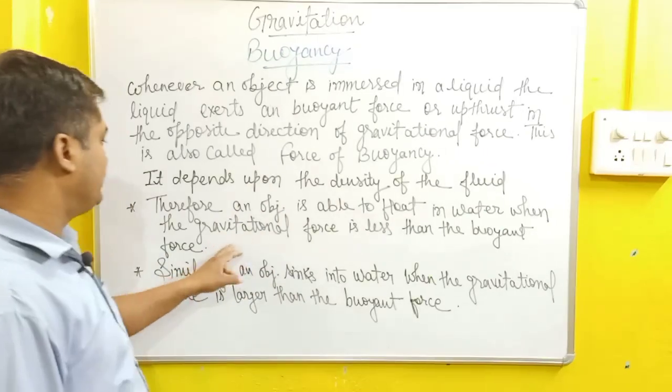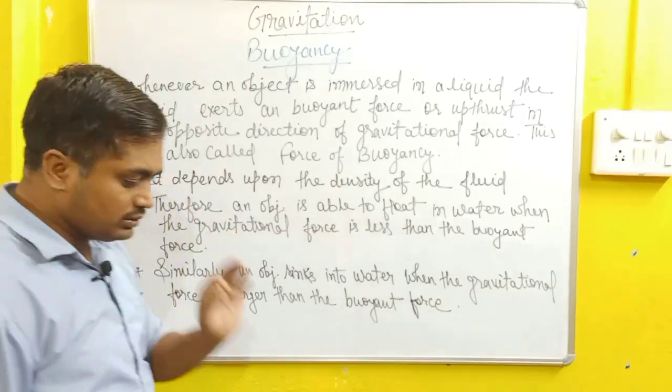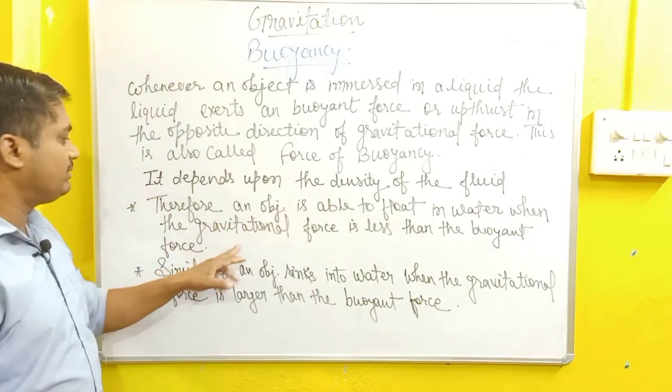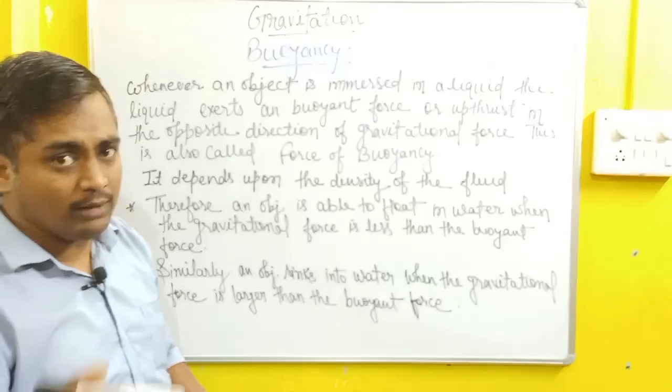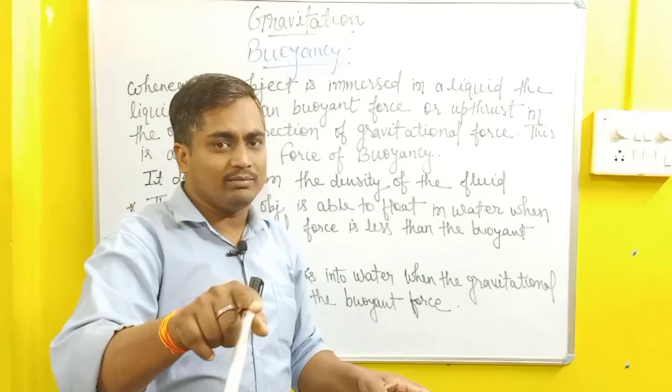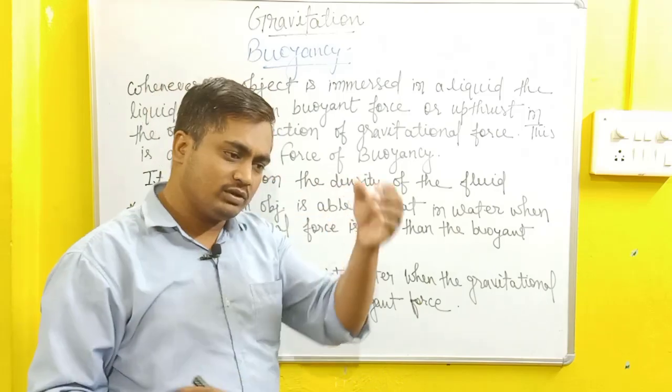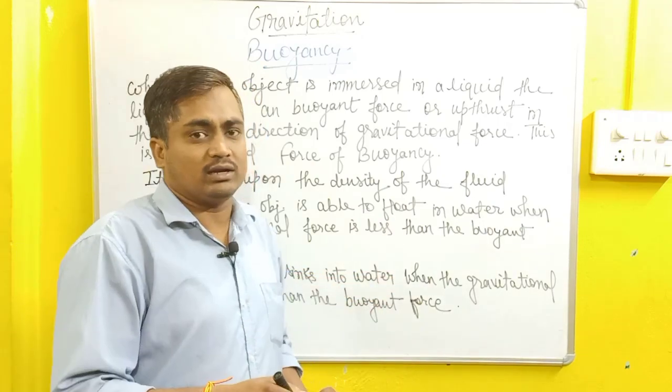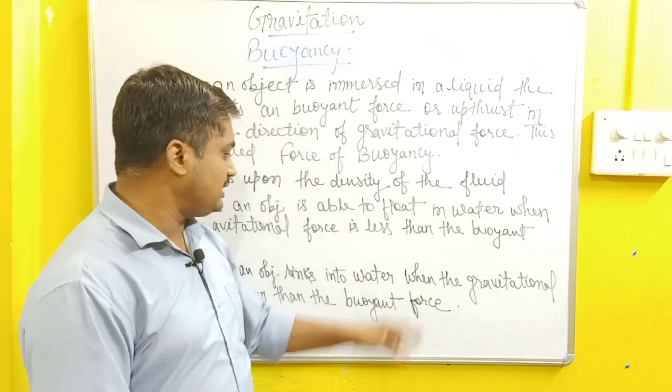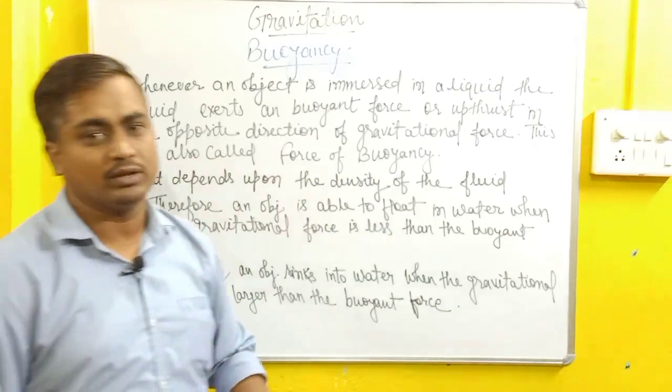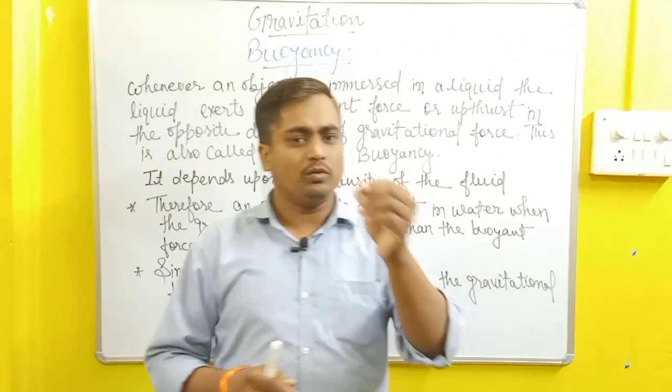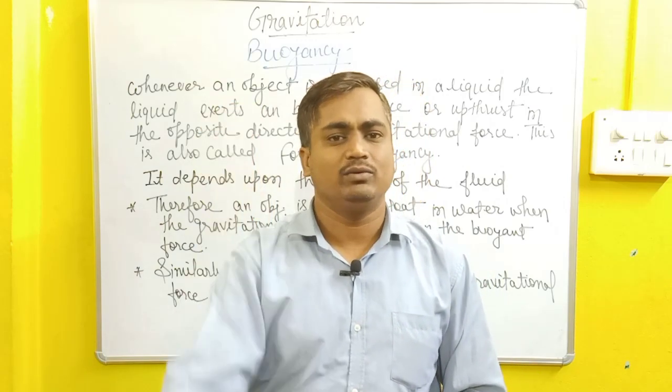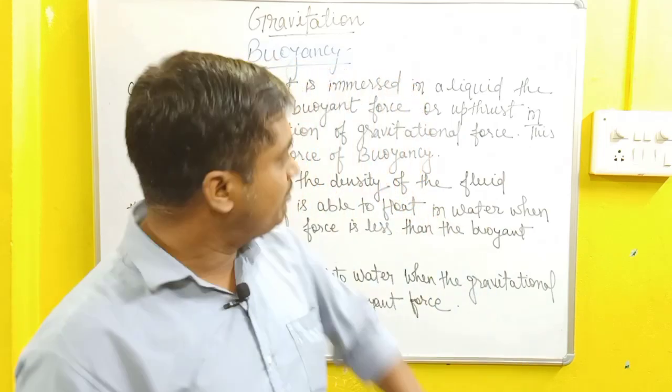Therefore, an object is able to float in water when the gravitational force is less than the buoyant force. You can understand this students that when gravitational force is less than the buoyant force, the object floats. Otherwise, an object sinks if the gravitational force is more than the buoyant force. If the buoyant force is greater, the object will float on water. This is the whole action behind the buoyancy.